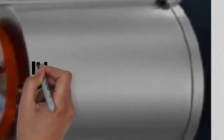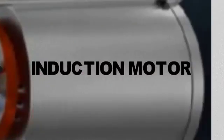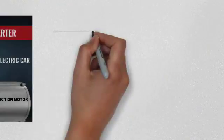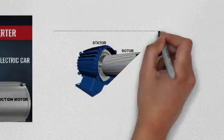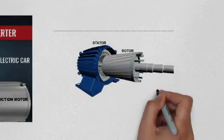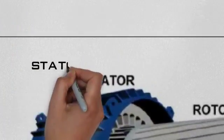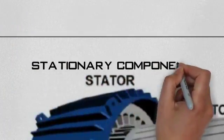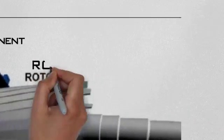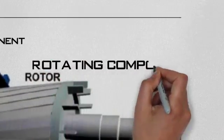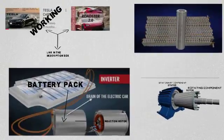That is the topic of this video: how does an induction motor work and what are its components. First, talking about the components, there are two basic parts. First is the stator and second is the rotor. As the name suggests, the stator is a stationary component and the rotor is a rotating component.